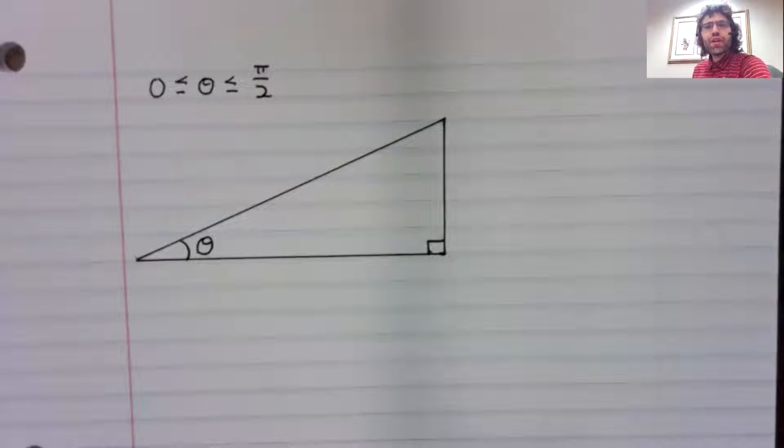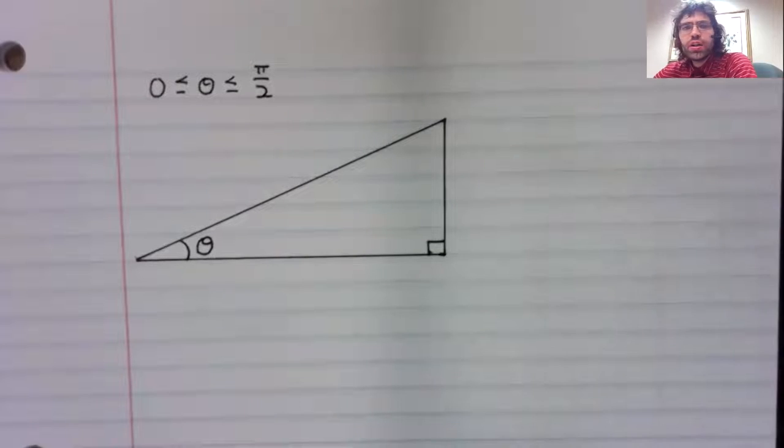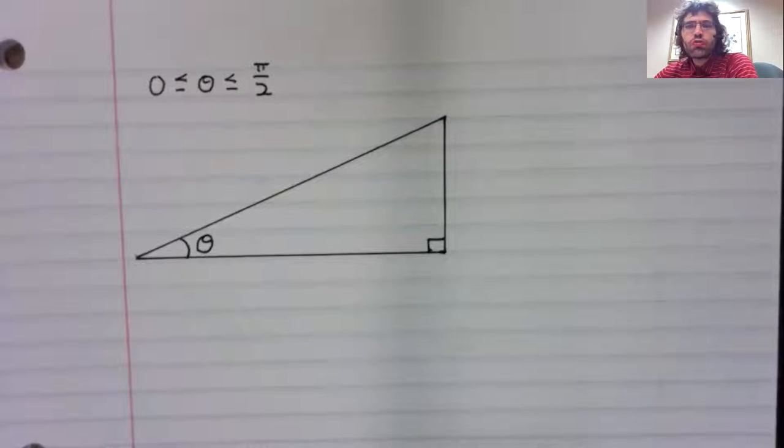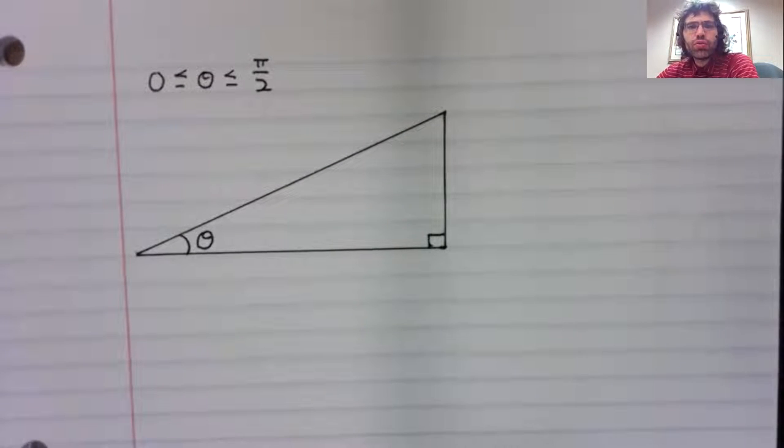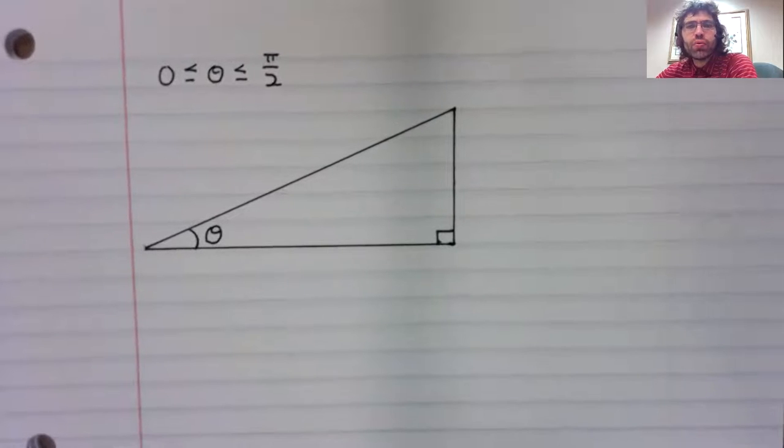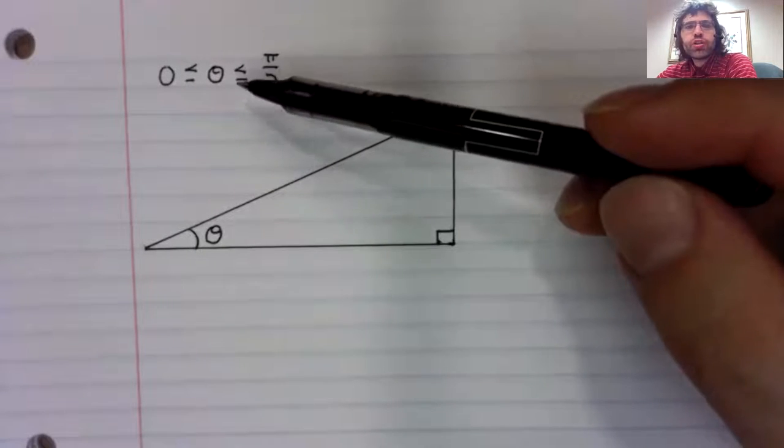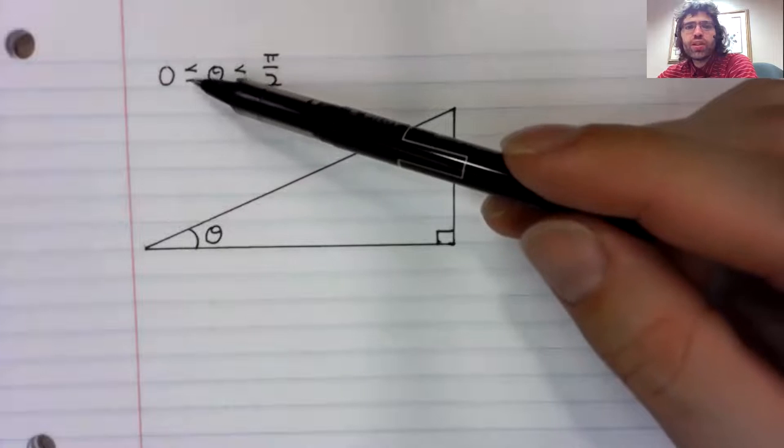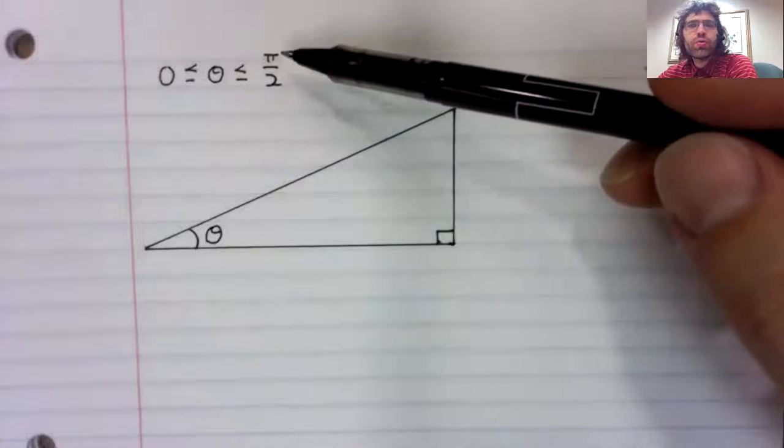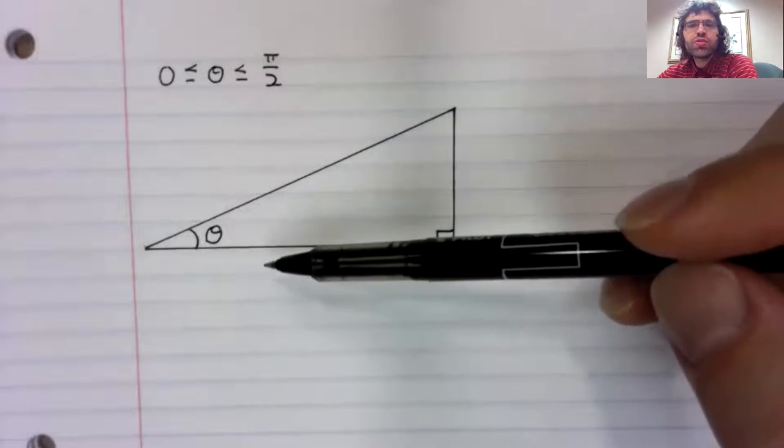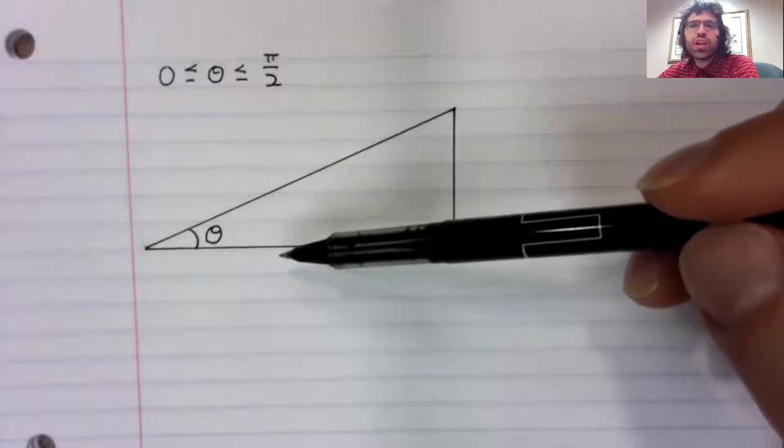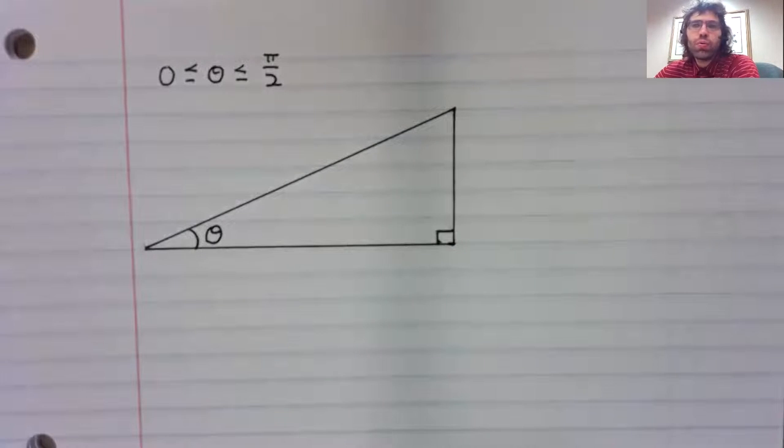Let's say we have a right triangle, and theta is one of the non-right angles on the triangle. This restriction that theta is between zero and pi over two is just saying that theta is an acute angle.